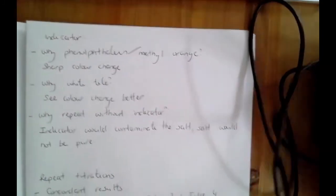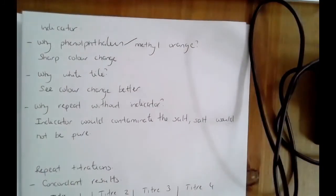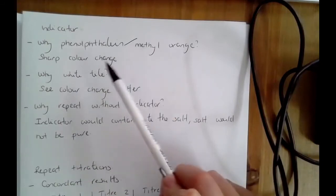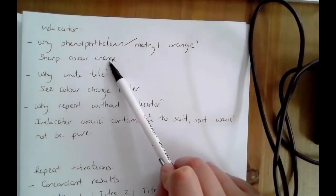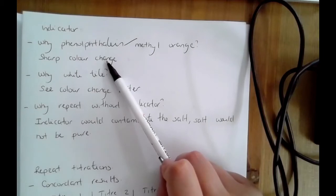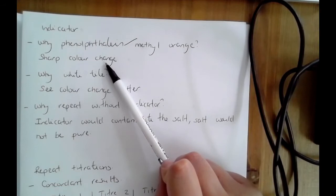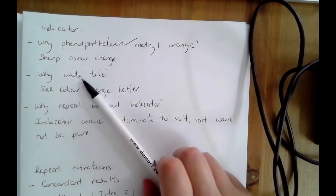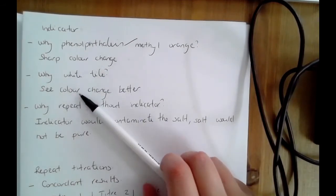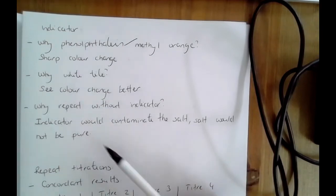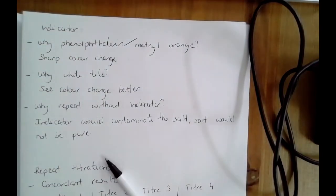Regarding the indicator: use phenolphthalein or methyl orange because they have a sharp color change. Do not use universal indicator because it has a gradual color change. You can put a white tile under the conical flask to make the color change easier to see. Repeat at the end without the indicator because you're trying to get a pure salt — the indicator would contaminate it and cannot be removed.